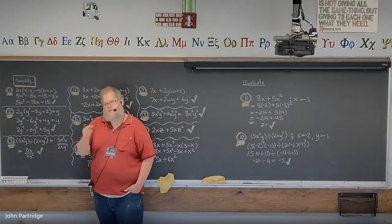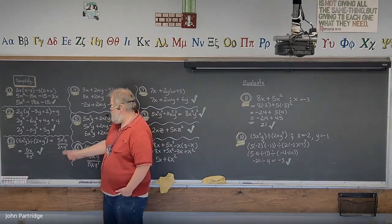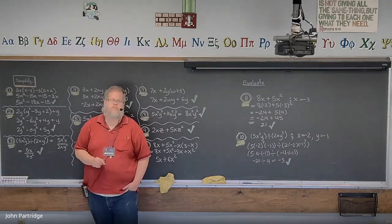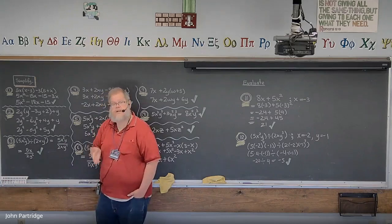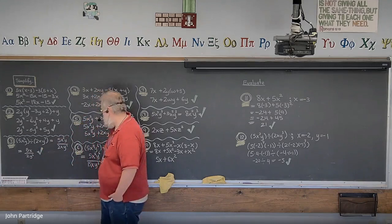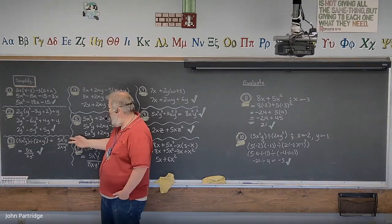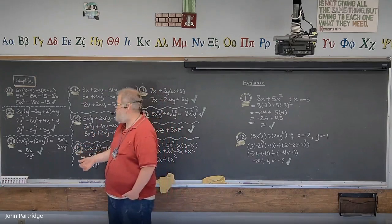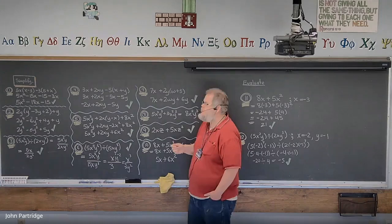Problem 3: monomial 5x²y divided by monomial 2xy³. Rewrite the problem as a fraction: 5x²y over 2xy³. The coefficients 5 and 2 stay as 5/2 — or equivalently 2.5, both are correct. For x: power 2 minus power 1 gives x¹ in the numerator. For y: power 1 minus power 3 gives y⁻², which reciprocates to the denominator. Final answer: 5x over 2y² (or equivalently 2.5x over y²).